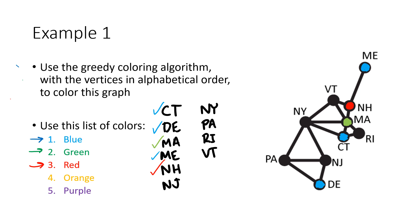Next up is New Jersey. New Jersey is connected to Delaware, so it can't be blue, but it's not connected to anything else that has a color, so we can once again use green. Anytime we want to color a vertex, we want to use the lowest numbered color we're allowed to use. It would be legal to make New Jersey red, but the greedy coloring algorithm says you use the lowest numbered color you can at each step.